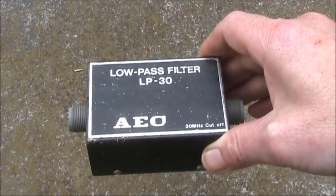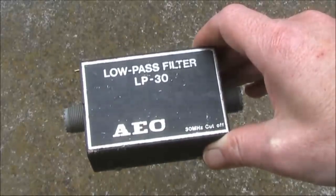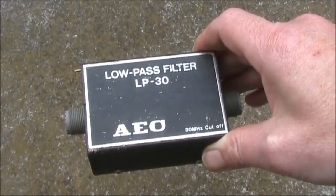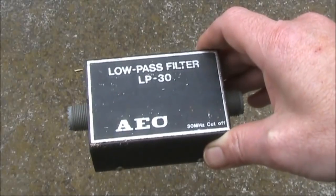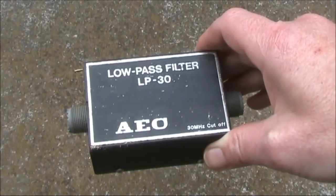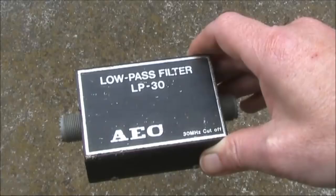Most of the low-pass filters that you can buy for amateur radio have a cut-off of 30MHz. The idea was that if you connected them in the antenna line of an HF transceiver, then that would reduce the chance of harmonics from your rig causing interference to TV sets.